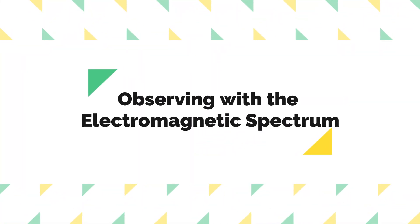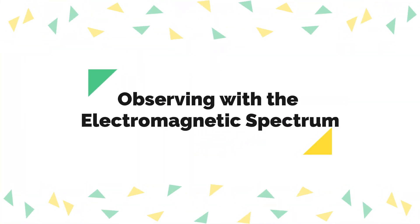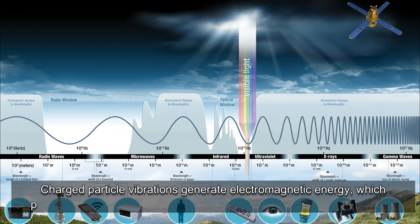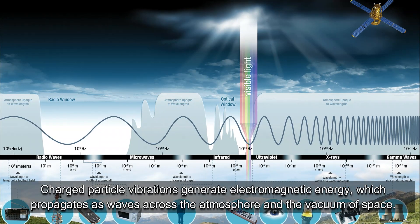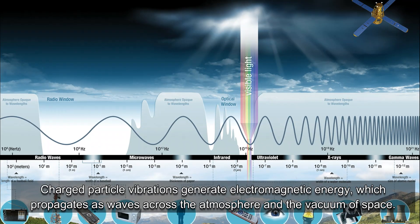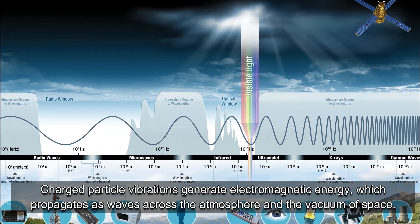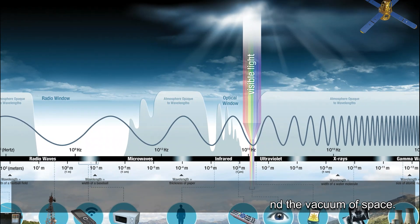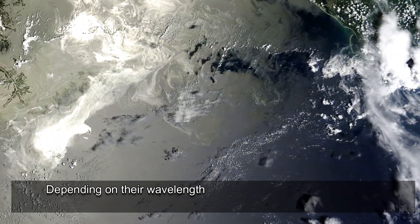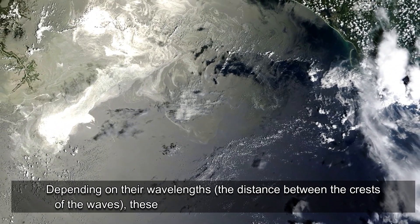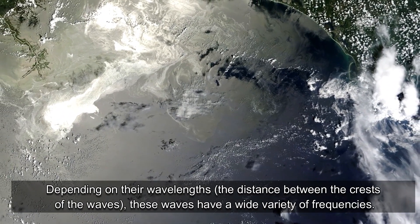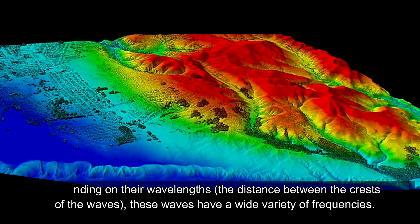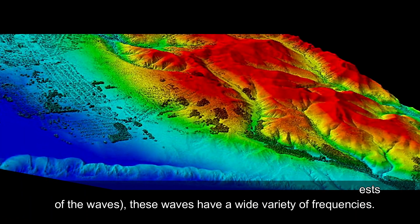Charged particle vibrations generate electromagnetic energy, which propagates as waves across the atmosphere and the vacuum of space. Depending on their wavelengths — the distance between the crests of the waves — these waves have a wide variety of frequencies.